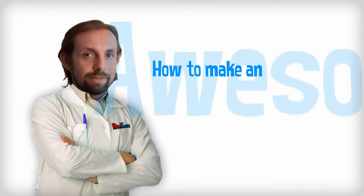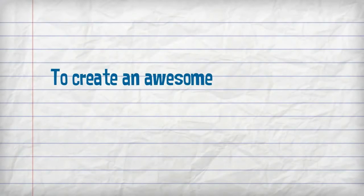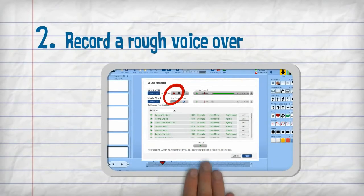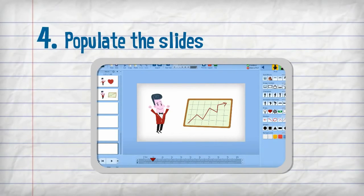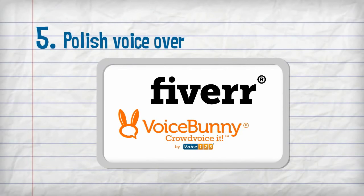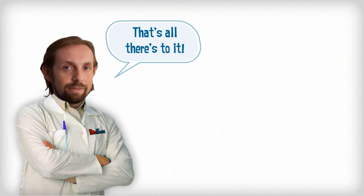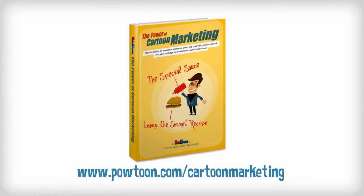There you have it — how to make an awesome animated video in under 10 minutes. You've now got all the essential concepts and tools at your fingertips. Let's do a quick review. To create an awesome animated video, all you need to do is: write a clear and concise script that speaks directly to your audience; record a rough voiceover to set up initial slide lengths and animation timing; divide your slides so they run alongside the proper audio sections; populate the slides with images and set up their transitions; then polish your Powtoon with a more professional voiceover, add in background music, and fine-tune the timing. And remember, you can find all of this info in more detail, including technical guides and screenshots, in our free Power of Cartoon Marketing Guide available on our website.